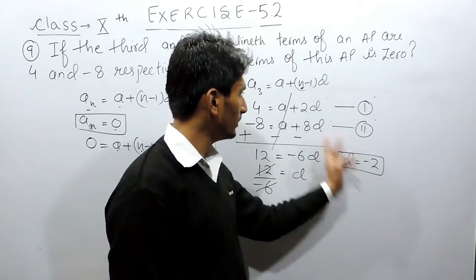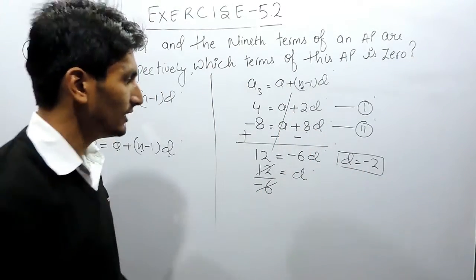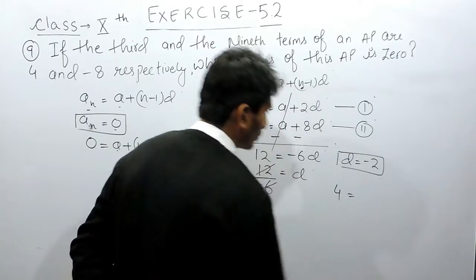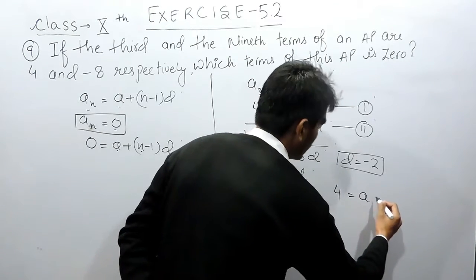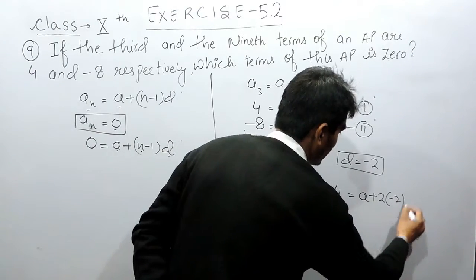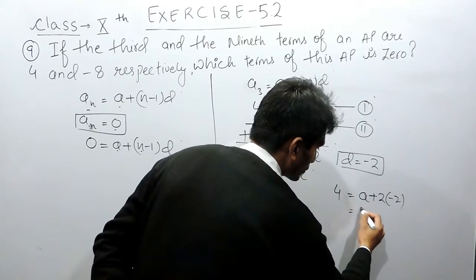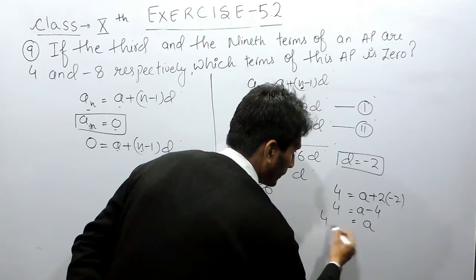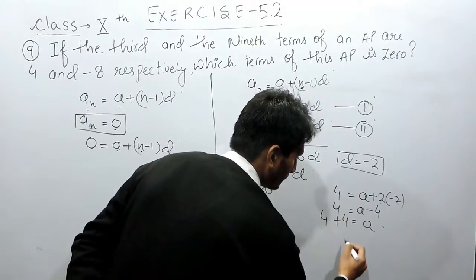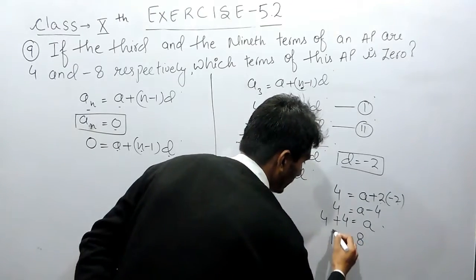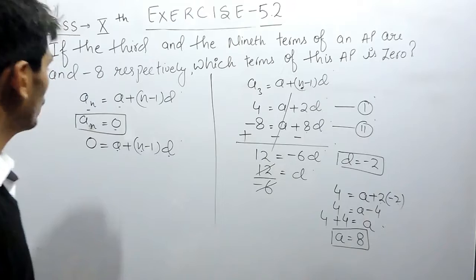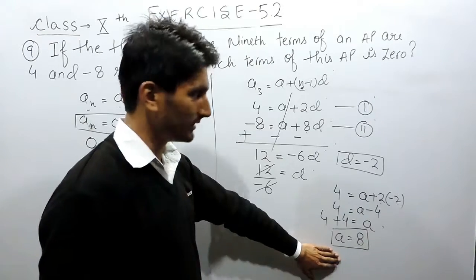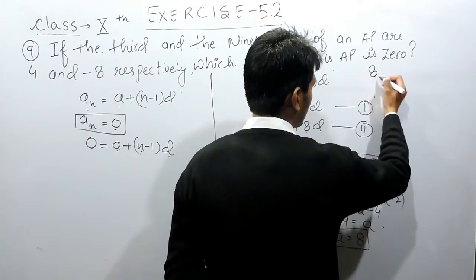Now substituting the value of d into the first equation: a plus 2d equals 4, so a plus 2 times minus 2 equals 4, giving a minus 4 equals 4. Shifting minus 4 to the other side, it becomes plus 4, so a equals 8. The first term of the AP is 8.